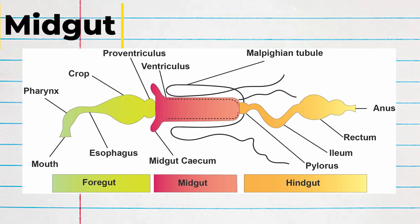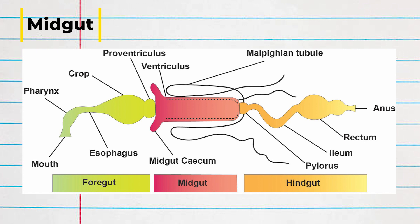The midgut is specialized for digestion and absorption, specifically through chemical digestion. There are two main structures that compose the midgut: the ventriculus and the gastric secae. The midgut begins with the gastric secae, which are tube-like structures protruding from the top of the midgut. As there is only limited space in the body of an insect, gastric secae provide additional surface area for digestion.